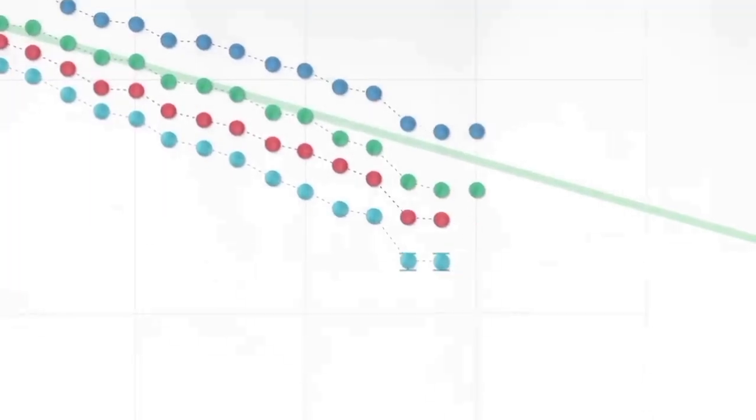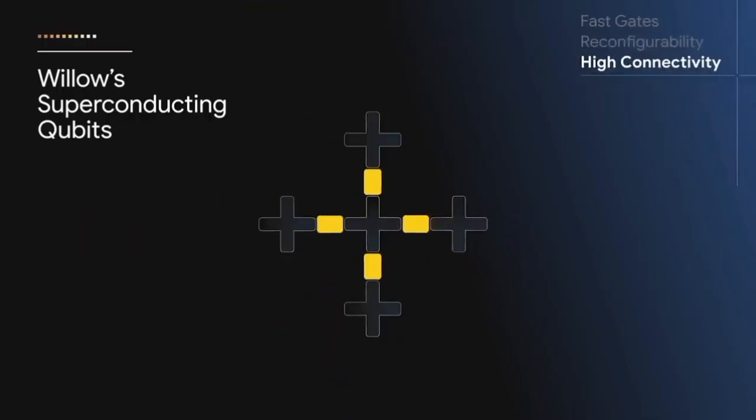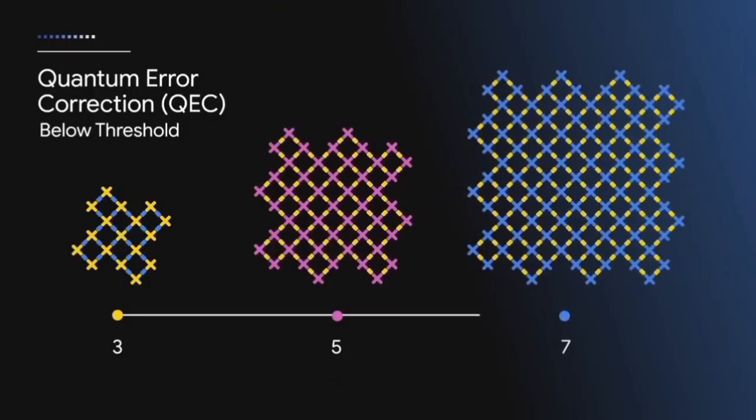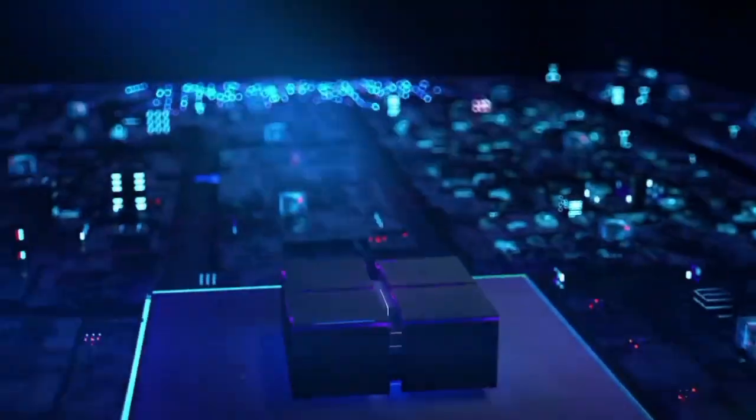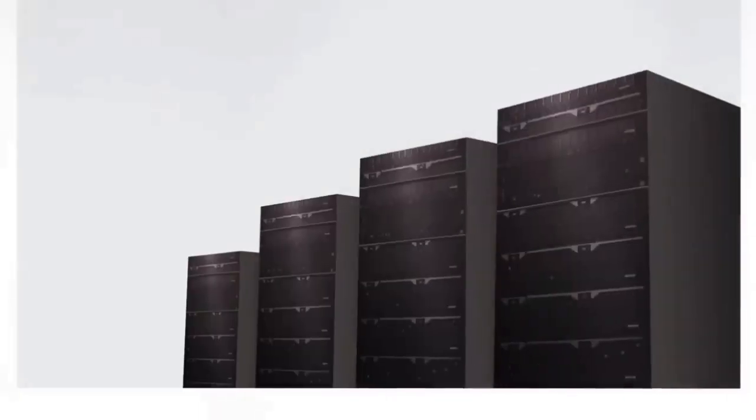Every additional qubit doubles the processing power. But it's not just about the number of qubits. It's about improving coherence times, error correction, and reducing noise in the system. Willow incorporates cutting-edge error correction techniques. Quantum systems are extremely sensitive.